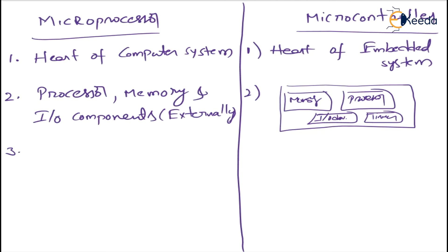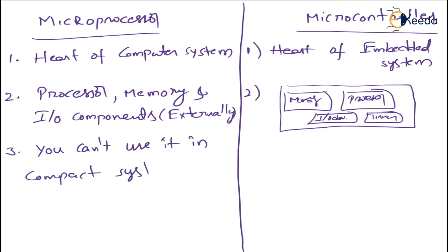Coming to the third point: a microprocessor cannot be used in compact systems. You cannot use it in compact systems because, as you can see in your homes, you have a monitor and CPU which takes quite a large space. Whereas a microcontroller can be used in compact systems.